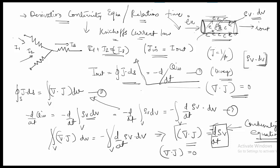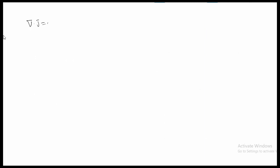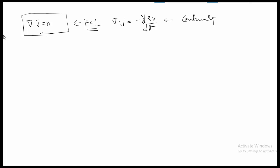To summarize: del dot J equals zero forms the basis of Kirchhoff's current law (KCL), and del dot J equals minus d(ρv)/dt is known as the continuity equation. Next, we derive the relaxation time.